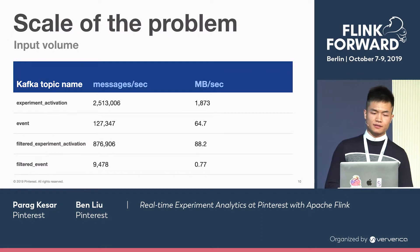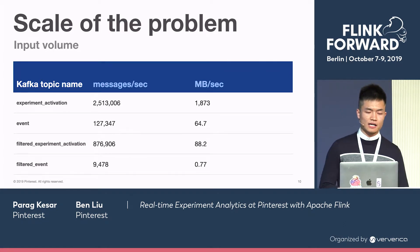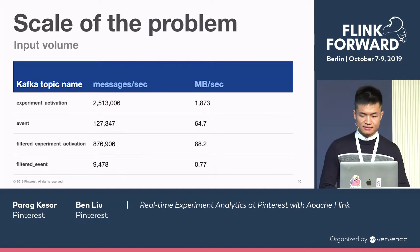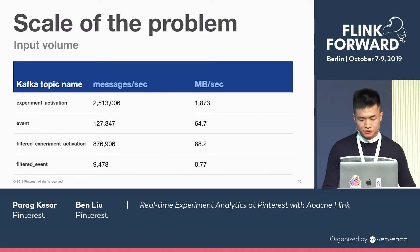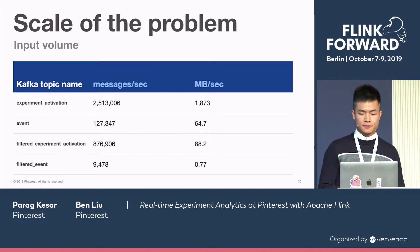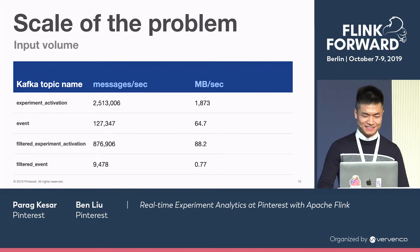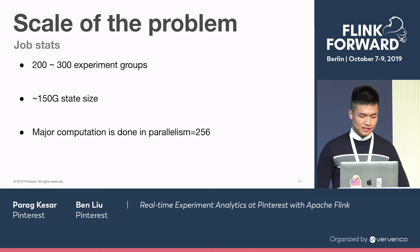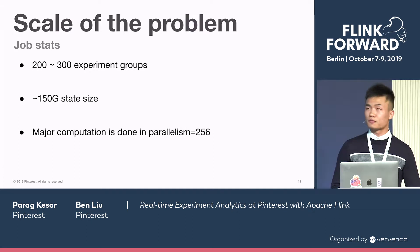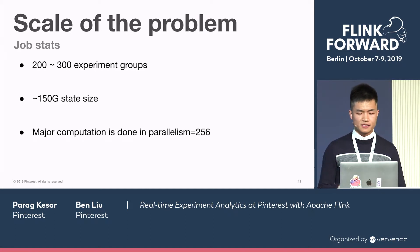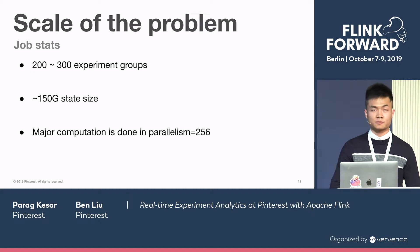I'd like to mention the scale of this problem. For the four Kafka topics we were dealing with, they are quite large. Flink is able to process millions of messages per second, and that's why we love it. At any given time, we are computing experiment metrics for 200 to 300 experiment groups, maintaining around 150 gigabytes of state, and major computation is done at parallelism 256.